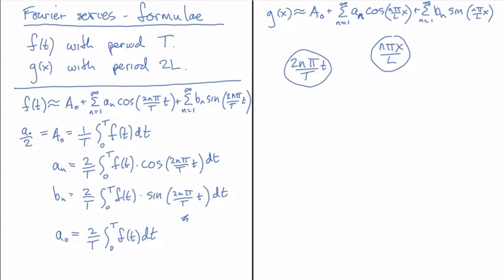And then they would be the same. 2n pi x over the period and 2n pi t over the period. So that's why these two look different, but they really are the same.